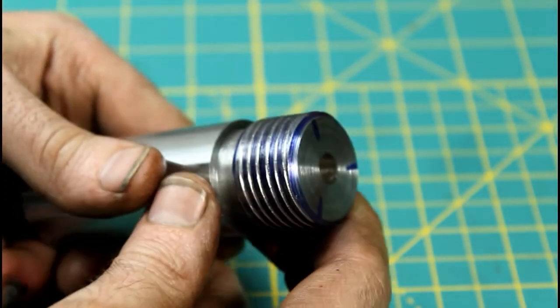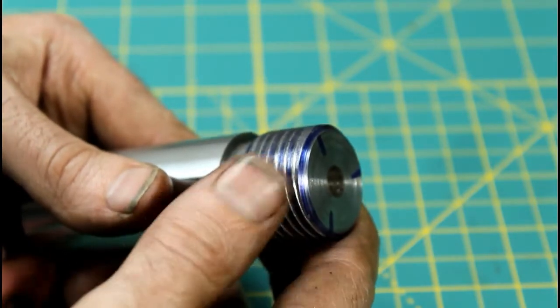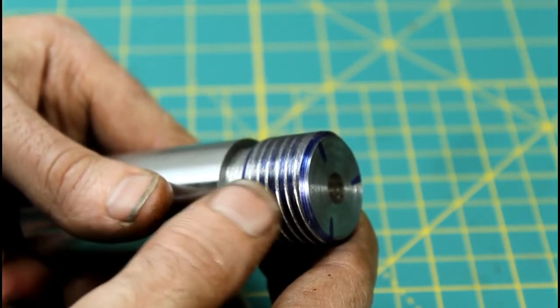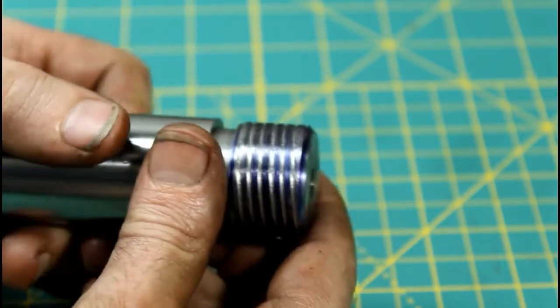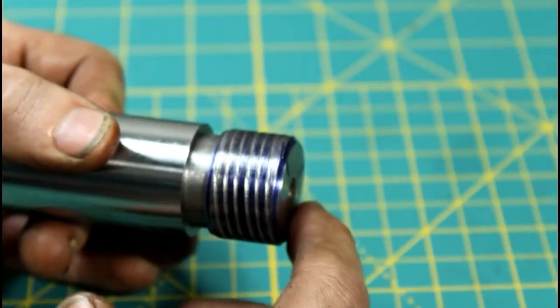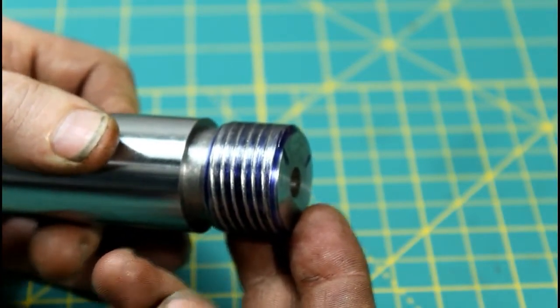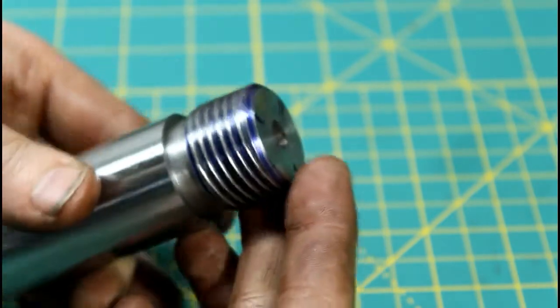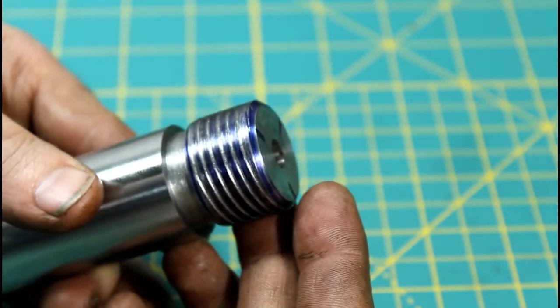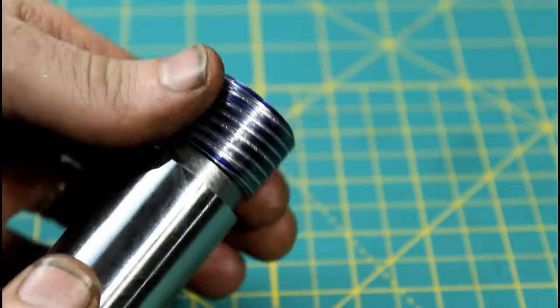Well, that's where a multiple start thread would come in, is that you don't have to have as deep a thread in order to get the strength, because now we have three threads here. Imagine if this was only one thread with such a high lead angle. Well, there'd be almost no strength on the thread if it was a thin-walled piece of pipe. There's a few different benefits to a multi-start thread, and that's one of them.